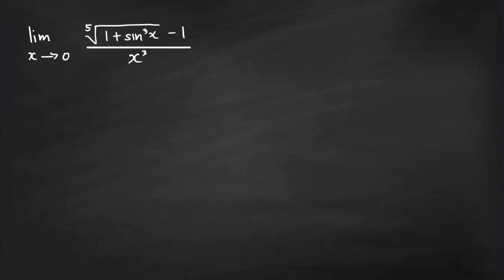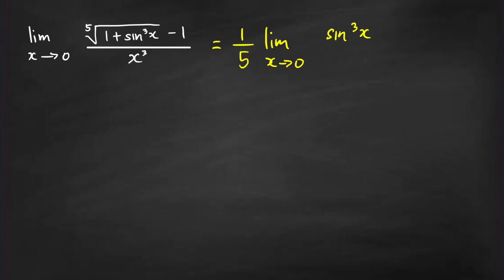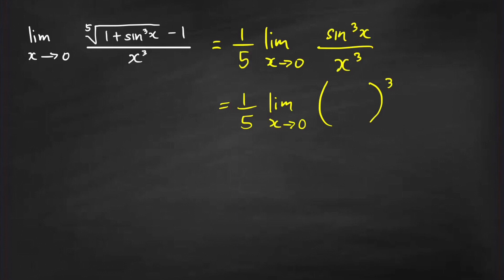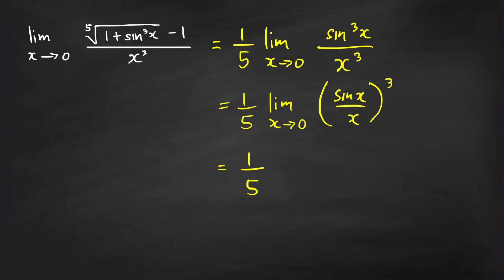Now consider the third problem. Using our technique, we can easily determine the limit of this expression. It is equal to 1 over the index, which is 5, times the limit of the expression without the radical. If we remove the fifth root, we're left with sin cubed x in the numerator divided by x cubed. This is 1 over 5 times the limit as x goes to 0 of (sin x over x) cubed. The limit of sin x over x as x goes to 0 is equal to 1. So this is just 1 cubed, which equals 1 over 5.